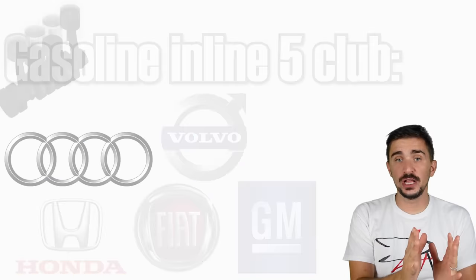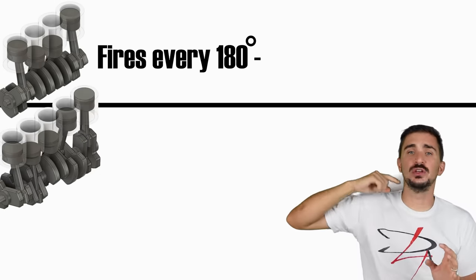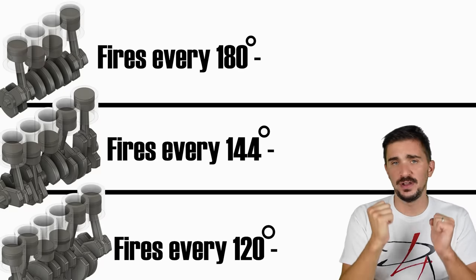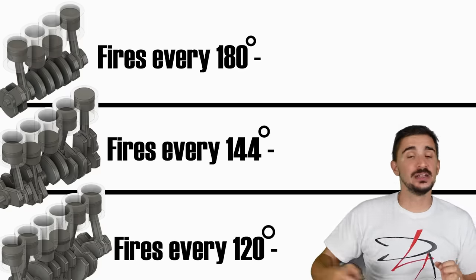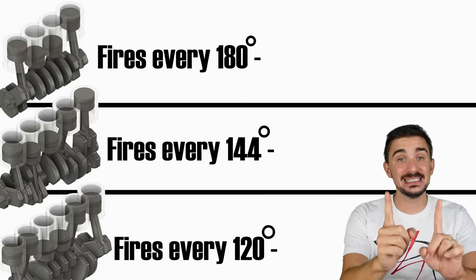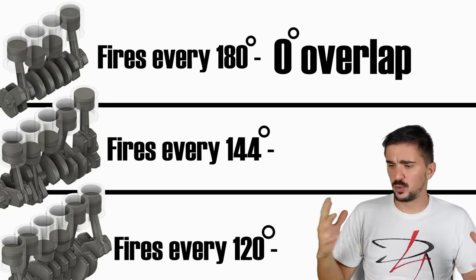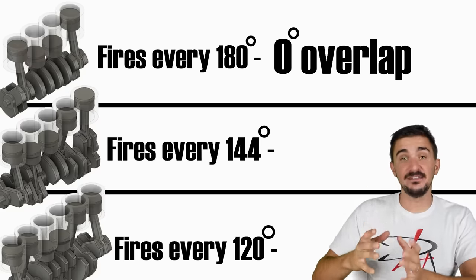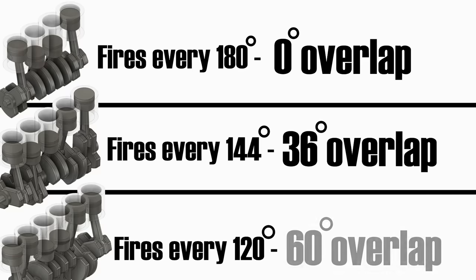The Inline 4 engine fires every 180 degrees of engine rotation. The Inline 5 every 144, and the 6 every 120 degrees of engine rotation. As we said, one stroke is 180 degrees of engine rotation, which means that the Inline 4 has zero power stroke overlap. In other words, it has no power stroke overlap at all. Whereas the Inline 5 and the Inline 6 have 36 and 60 degrees of power stroke overlap, respectively.